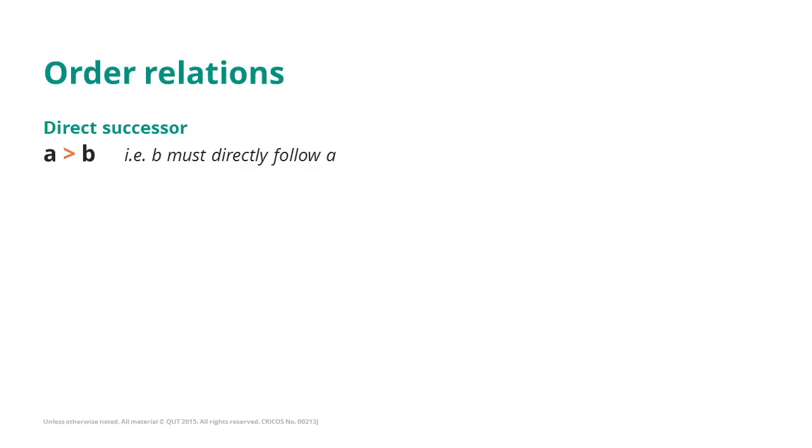You see the symbol between A and B is a symbol that you may know already from basic arithmetics. It looks like the greater sign. Here in this context it has a very specific meaning. It means directly following and it points to the activity that is following.